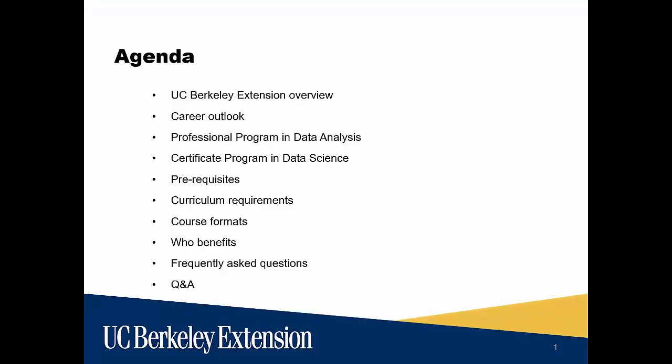For the agenda today, we're going to first talk a little bit about UC Berkeley Extension — its history, mission, and the benefits of taking courses with us. Then we'll take a look at the career outlook data for the field of data analysis and data science. Then we'll talk in more detail about the certificate programs themselves, covering all the goals, their cost, curriculum requirements, and course options. Finally, we'll cover the various formats and locations where you can take courses at Extension and talk about the benefits of the programs and the careers that the programs will prepare you for.